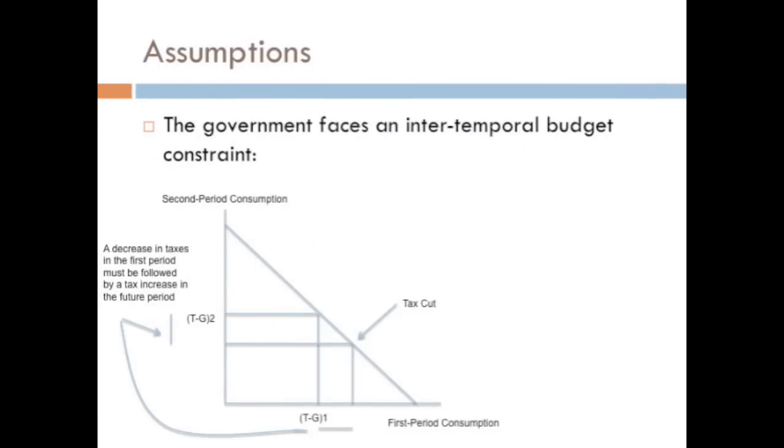Now we're assuming that the government also faces an inter-temporal budget constraint, which is a very key assumption of Ricardian equivalence. This basically means that if the government cuts taxes today, in the future they'll have to raise taxes as long as that tax cut was financed by debt.